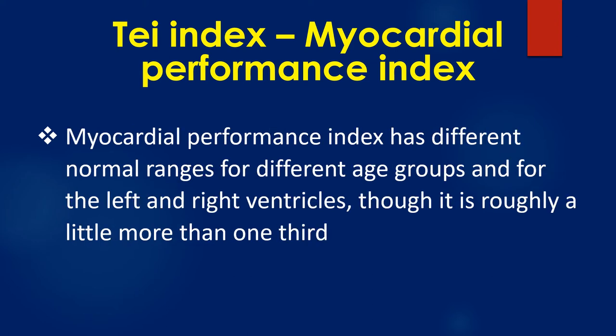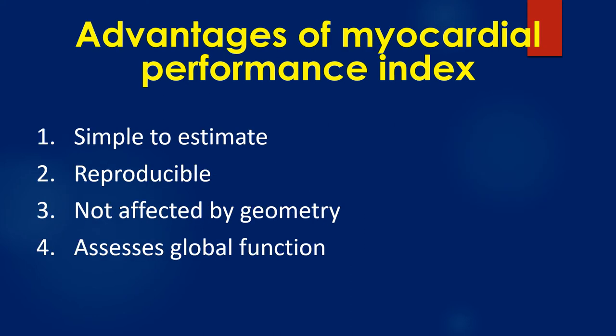Myocardial performance index has different normal ranges for different age groups and for the left and right ventricles, though it is roughly a little more than one third. Advantages of myocardial performance index are: 1) simple to estimate, 2) reproducible, 3) not affected by geometry, and 4) assesses global function.